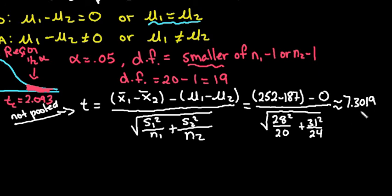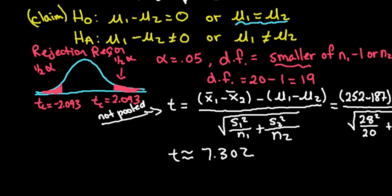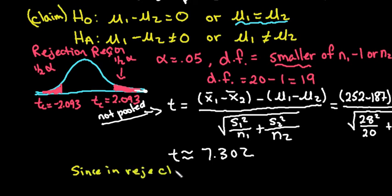We compare our standardized test statistic of approximately 7.302 to our rejection region. Since 7.302 is well to the right of 2.093, it falls in the rejection region. Therefore, we reject the null hypothesis.